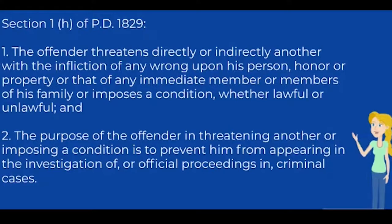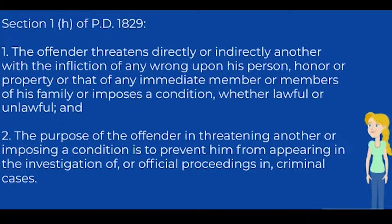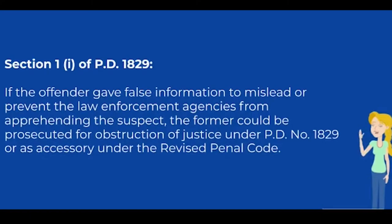Section 1, Paragraph H of PD No. 1829: the offender threatens directly or indirectly another with the infliction of any wrong upon his person, honor, or property, or that of any immediate member of his family, or imposes a condition whether lawful or unlawful; and the purpose is to prevent that person from appearing in the investigation of or official proceedings in criminal cases. Section 1, Paragraph I of PD No. 1829 provides that if the offender gives false information to mislead or prevent law enforcement agencies from apprehending the suspect, the offender could be prosecuted for obstruction of justice under PD No. 1829, or as an accessory under the Revised Penal Code.